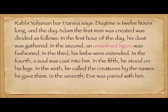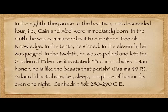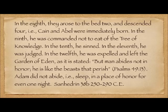In the third hour, his limbs were extended. In the fourth, a soul was cast into him. In the fifth, he stood on his legs. In the sixth, he called the creatures by the names he gave them. In the seventh, Eve was paired with him. In the eighth, they arose to the bed two and descended four — that is, Cain and Abel were immediately born. In the ninth, he was commanded not to eat of the tree of knowledge — a little out of order from the Tanakh text. In the tenth, he sinned. In the eleventh, he was judged. In the twelfth, he was expelled from the Garden of Eden, as it is stated: 'But man abides not in honor; he is like the beast that perish' — Psalms 49:13. So this is Rabbi Chanina's explanation of how this happened.